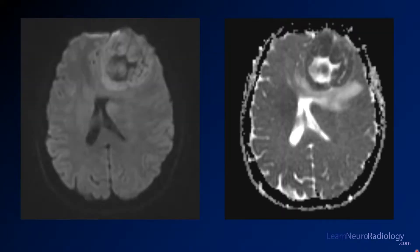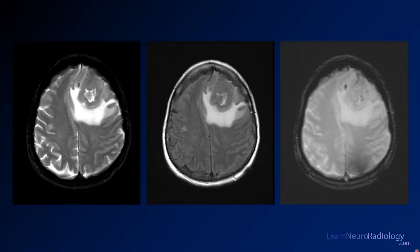The patient went on to get an MRI. This is diffusion and ADC. Here you have a selection of additional non-contrast images — T2 on the left, FLAIR, and gradient echo.